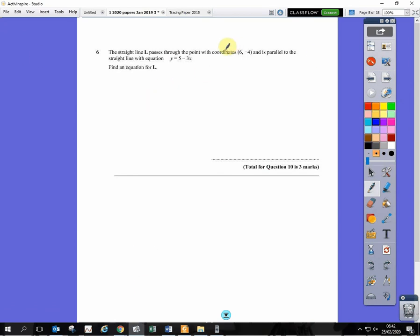So the line is parallel. That means it has the same gradient. The gradient of this line is minus 3. It's the same gradient. It's in the form y equals mx plus c. So it's y equals minus 3x plus c. Substitute the coordinate in to work out the value of c. Remember, it's x and y. So minus 4 equals minus 3 times 6 plus c. Do a bit of rearranging. You will end up with c equals 14. And then on the answer line, y equals either minus 3x plus 14 or 14 minus 3x, if you want to write it a little bit tidier.